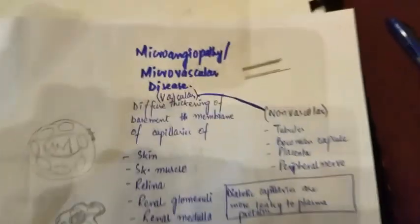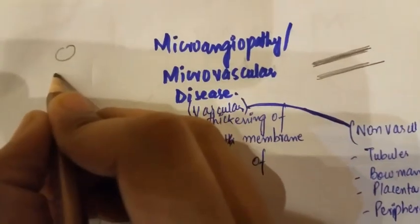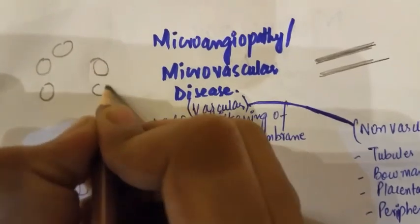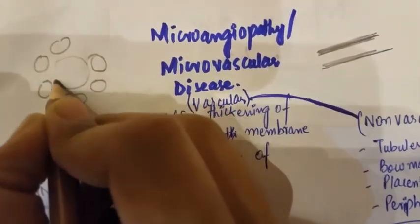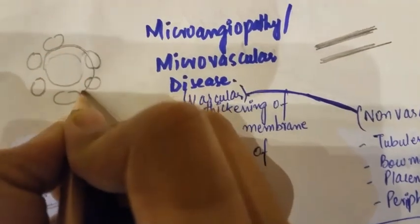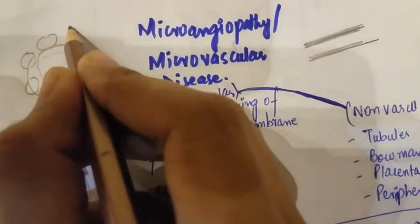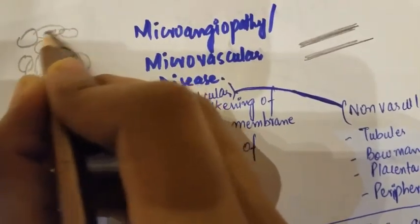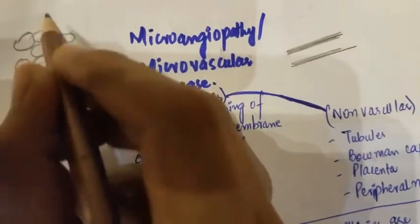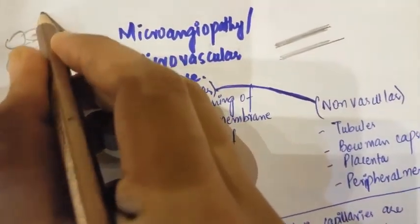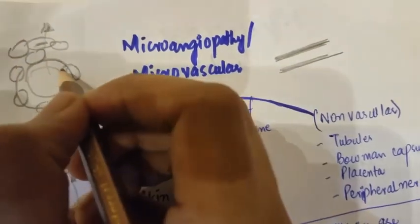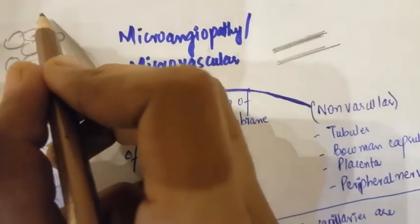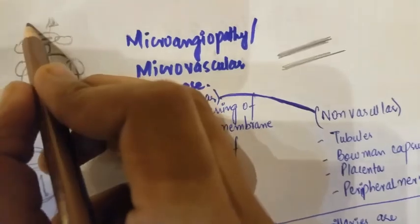Expansion of mesangial areas results, giving the mesangial matrix a nodular appearance and resulting in proteinuria. Proteinuria occurs because the mesangium increases, causing endothelial cells to separate more. The fenestrations between the endothelial cells increase, allowing mesangial and plasma proteins to leak out during filtration, causing proteinuria.